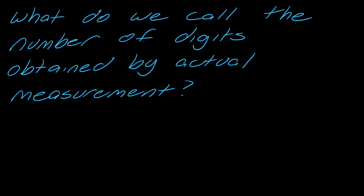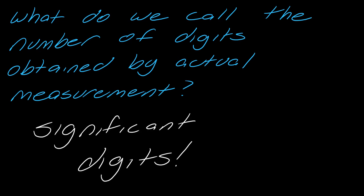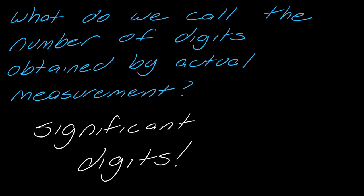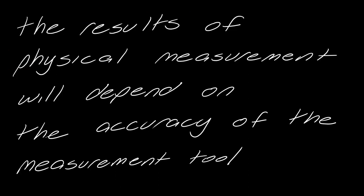What do we call the number of digits obtained by actual measurement? If I go out and measure versus calculating it, this is what's known as significant digits. The results of physical measurement always depend on the accuracy of a measurement tool.